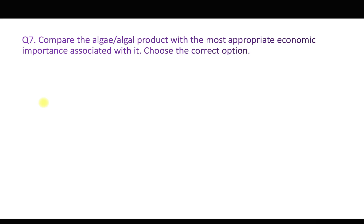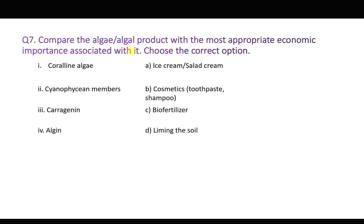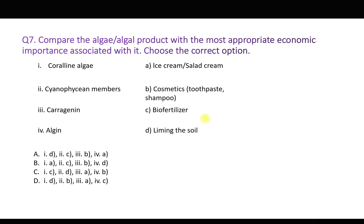Question number seven: Match the algal product with the most appropriate economic importance associated with it. On one side are the names of algae: coralline algae, cyanophycean members, carrageenan, algin. On the other side are economic uses: A: ice cream and salad cream, B: cosmetics, C: biofertilizer, D: liming the soil. You have to match the left side with the right side, and different combinations are shown in the options.